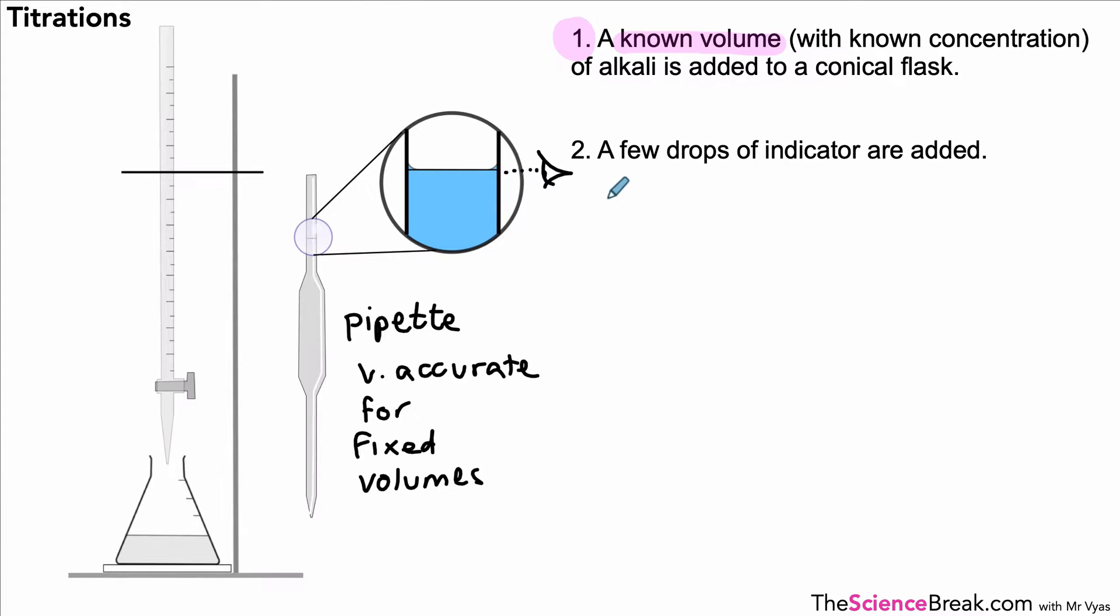We would then add a few drops of indicator to our flask. Now the indicator that's often used is called phenolphthalein. There are others as well, but one example is phenolphthalein. It's pink in alkali and when it's neutral it goes colorless.